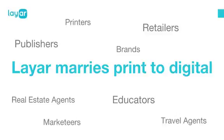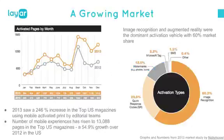What Layer does at its core is marry print to digital — we strengthen your print marketing by putting digital features on top of it. Not just publishers, but also printers, brands using product packaging, retailers using shop windows, real estate agents, educators, general marketers, and travel agents. This is a growing market: we've seen a 246% increase in mobile-activated print in the magazine market, and over 50% growth in mobile experiences in top US magazines.